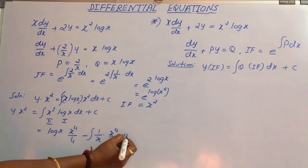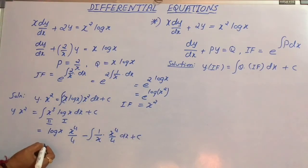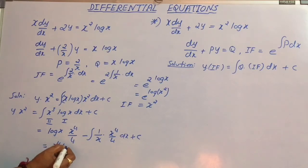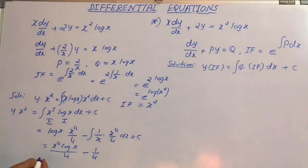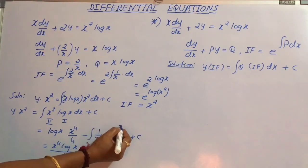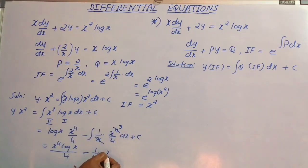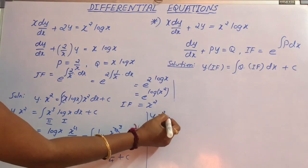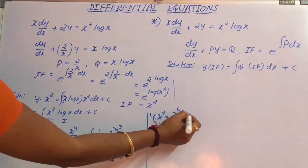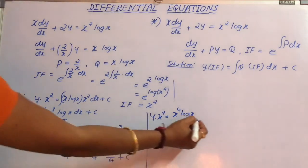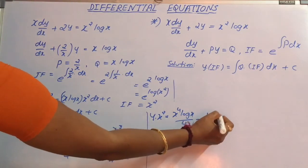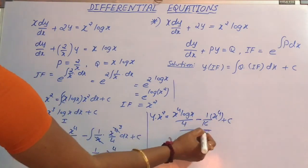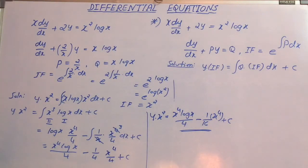This can be written as (x⁴ log x)/4, minus, taking 1/4 as the constant outside, the remaining integral is x³ dx. Integrating that gives x⁴/4 plus c. Therefore, the solution can be written as y·x² = (x⁴ log x)/4 − (1/16)x⁴ + c. And this is the required solution of the given differential equation.